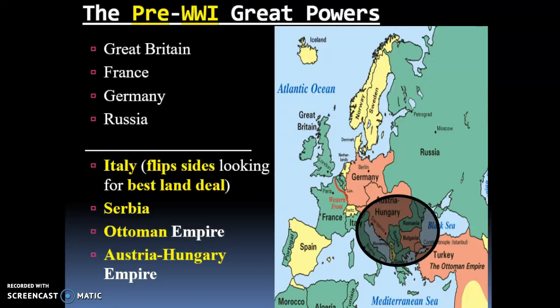The first country of focus is Italy. Italy is going to be jumping from alliance to alliance — they'll start on one side during the war and then jump to a different alliance. Italy is looking for the best deal; if they feel one side is going to win, they'll jump to that winning side because winners of a war normally get land. The second country of focus is Serbia, and Serbia is going to be one of the main, main countries in the start of World War I. We're also looking at the Ottoman Empire and the Austrian-Hungarian Empire.